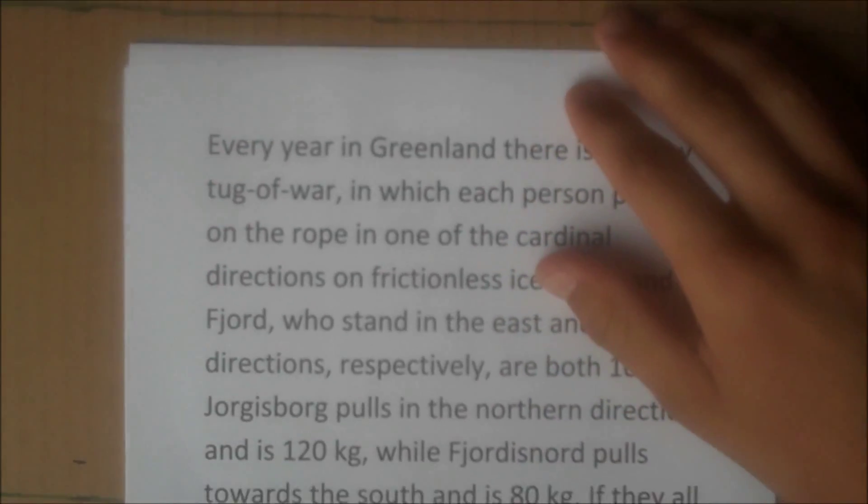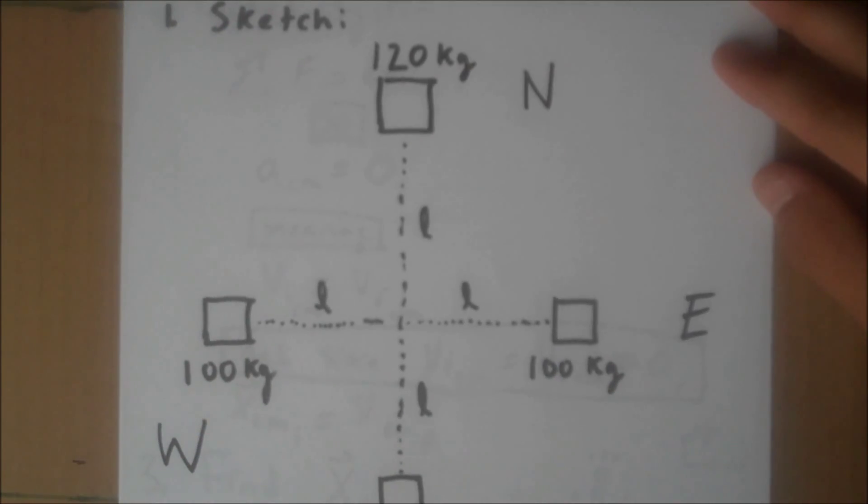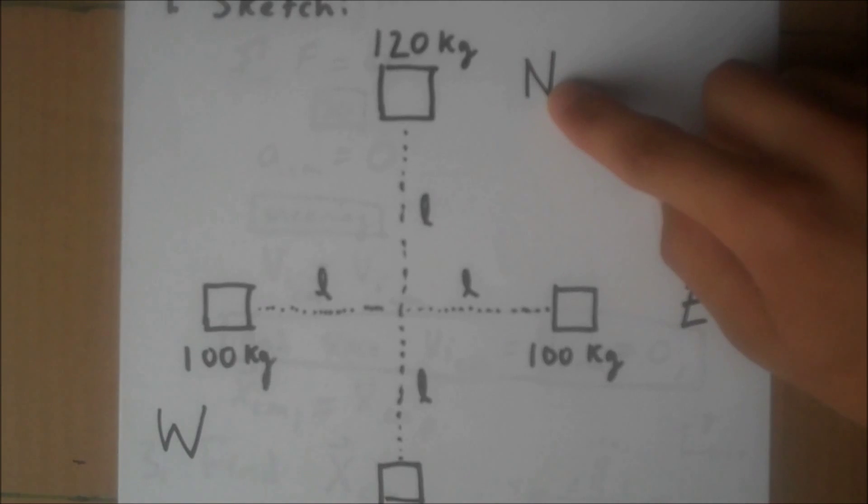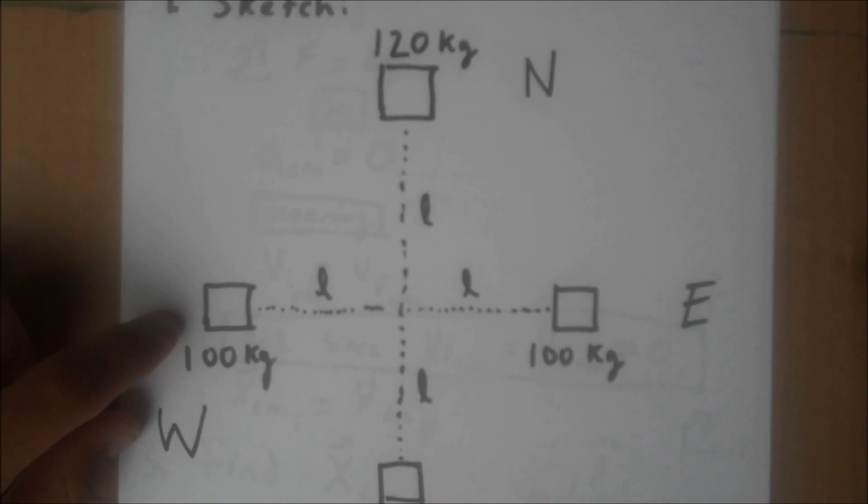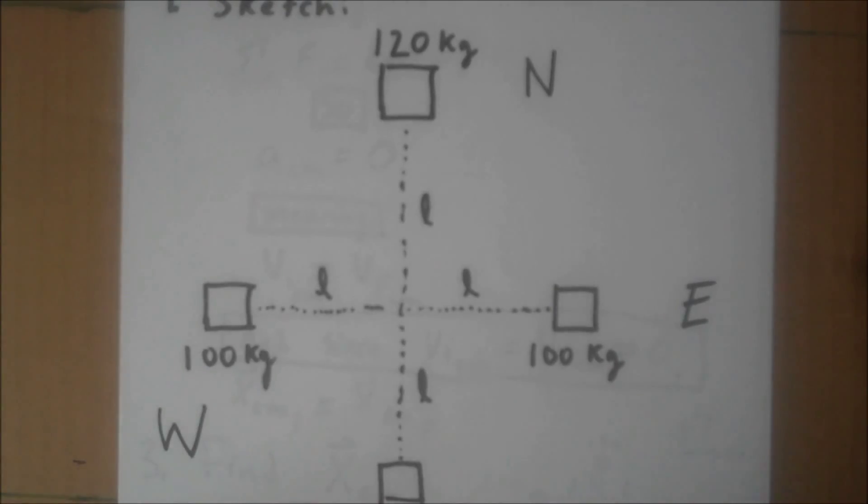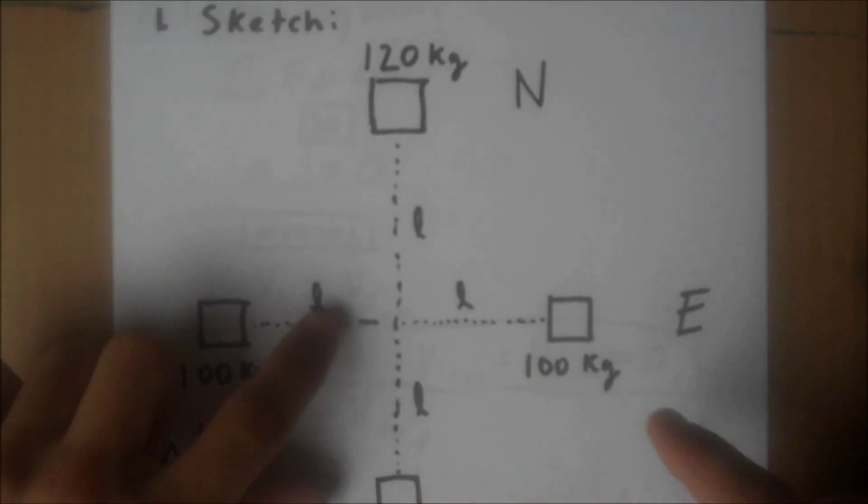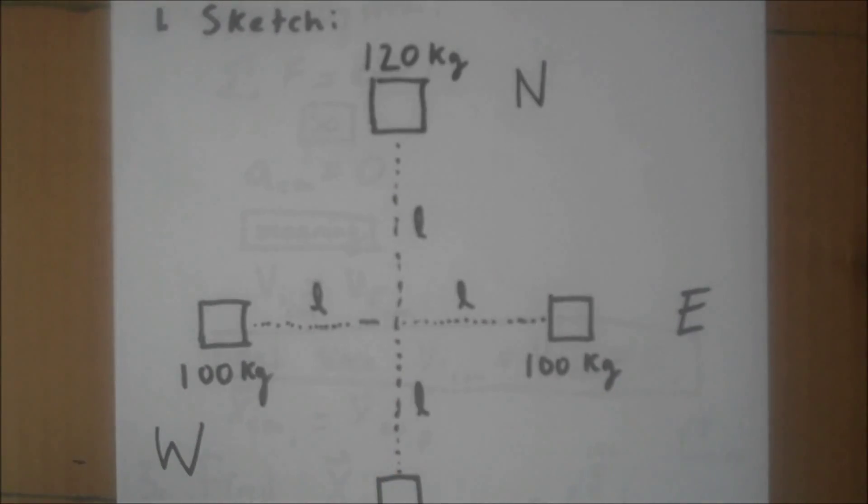It's hard to keep track of where everyone is, so as with any physics problem, our first step is going to be draw a sketch. Here we are. Big sketch. I hope it can fit in the camera. We have 120 kilograms in the north, 100 kilograms in the east, 100 kilograms in the west, and 80 kilograms here in the south. As with any tug-of-war, they all start a distance L from the center, and they're all going to begin pulling and walking towards each other.